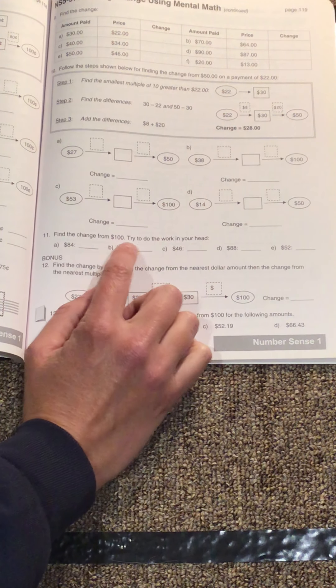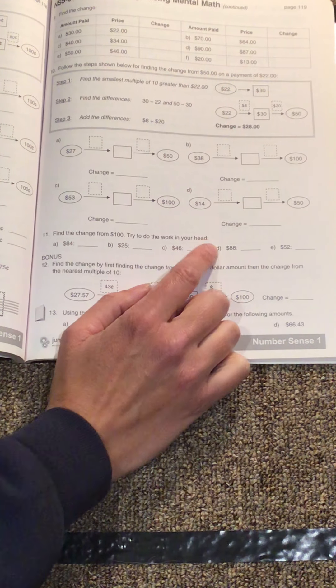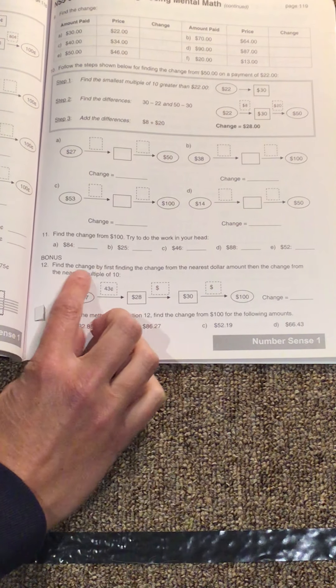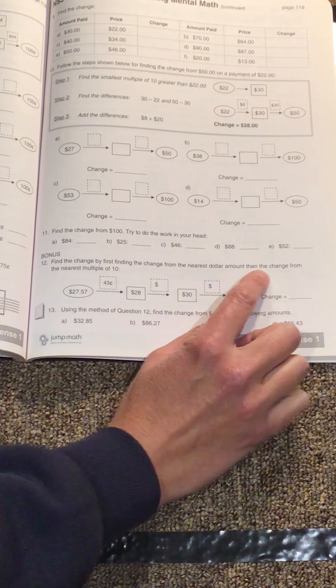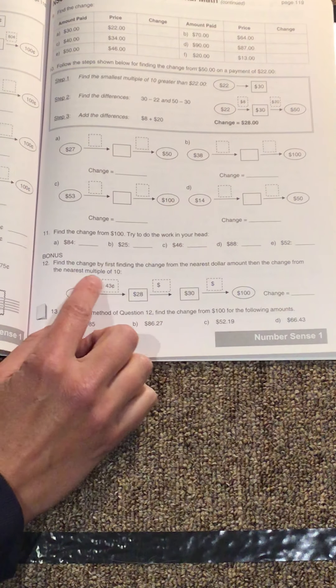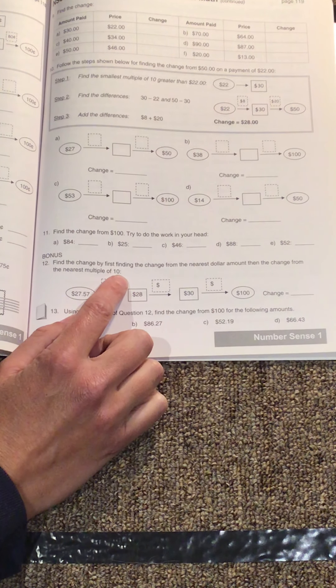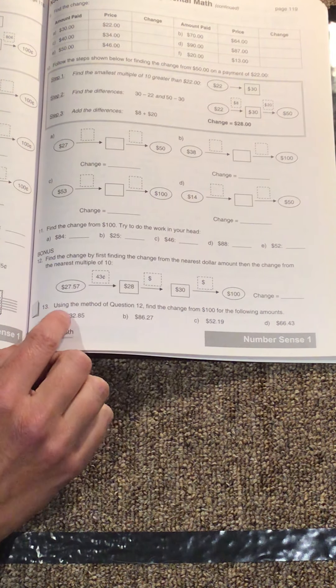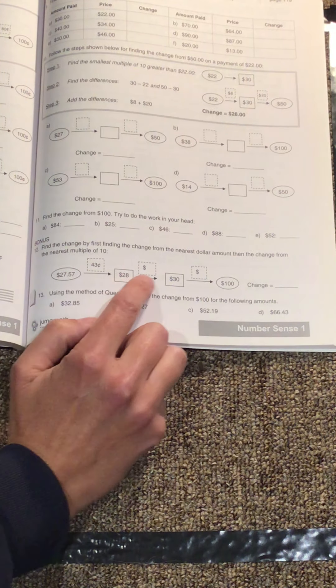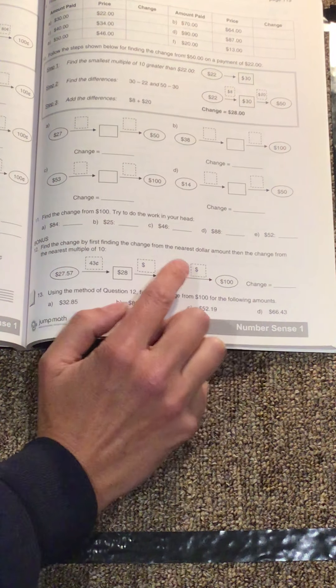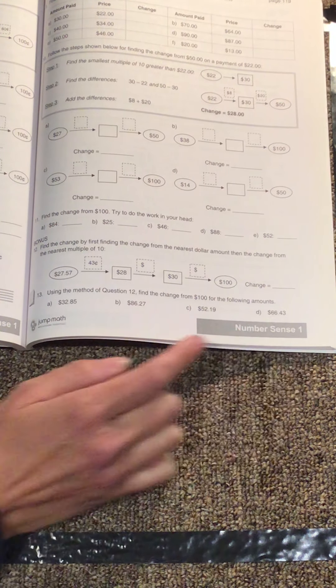Find the change from $100. Try to do the work in your head. Find the change by first finding the change from the nearest multiple of 10. Okay, so they've filled in the first part for you. So you just have to fill in this part and this part and then add up those three to get into that box.